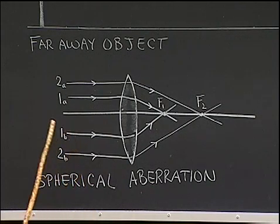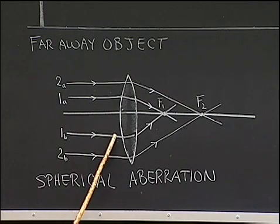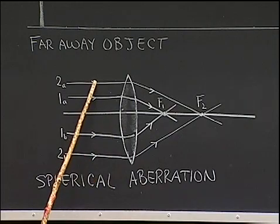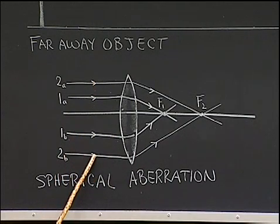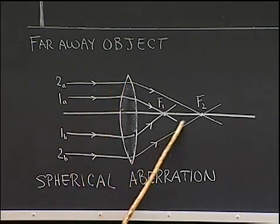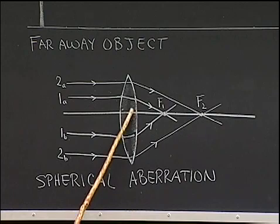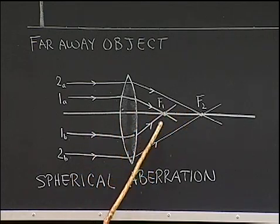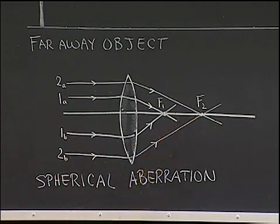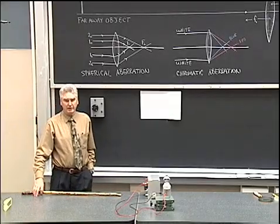With spherical aberration, we have light rays coming in close to the axis. Ray 1a and ray 1b, as I've labeled them, will cross the axis at the focal point for those two rays, whereas rays further out might have a different focal point. Ray 2a and ray 2b could cross the axis at a different point — that would be the focal point for those two rays. When inner rays and outer rays have different focal points, the focal point becomes ambiguous. For rays in between 1 and 2, we'd have a focal point somewhere between f1 and f2. So if we have an ambiguous focal point, we have an ambiguous image plane, and therefore we have a blurry image.